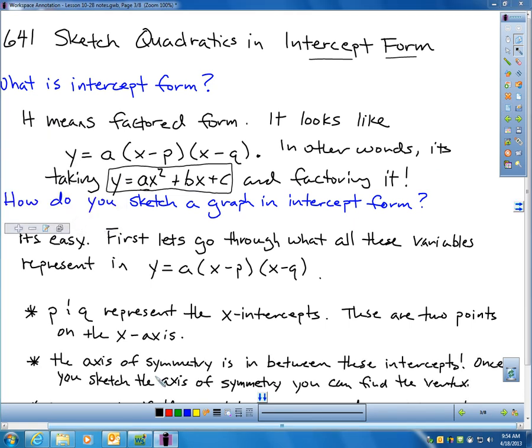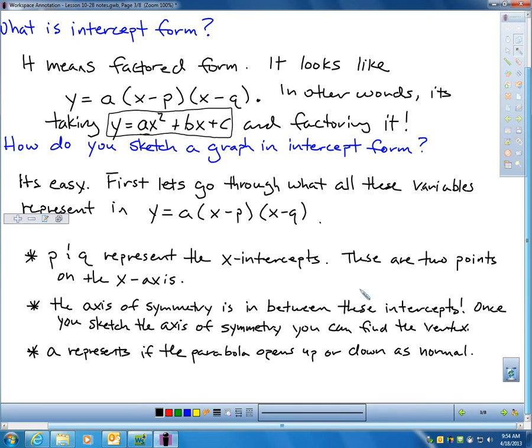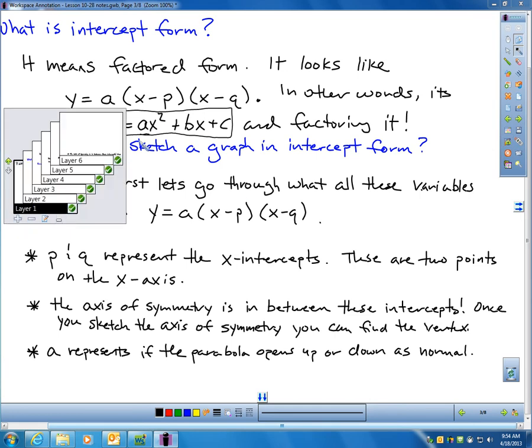Next, the axis of symmetry is right in between p and q, because the intercepts must be mirror images of each other. That's what axis of symmetry means. So, the axis of symmetry is always what p and q average out to. It's in between. A just tells me what A always tells me. Does the parabola open up or down? Is it stretched or shrunk and so on? Just like normal.